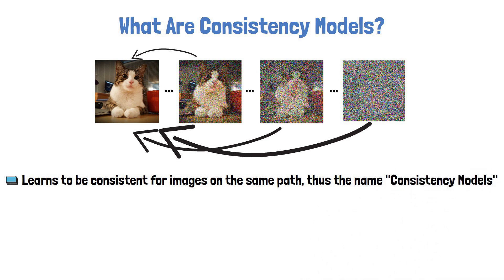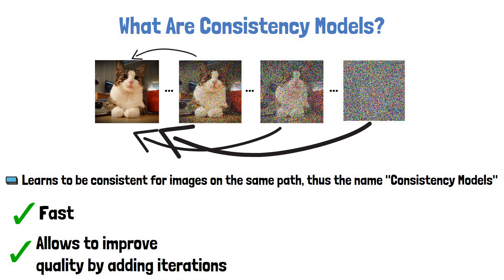With that capability, consistency models can jump directly from a completely noisy image to a clear image, skipping the slow process of diffusion models. Another super powerful attribute, which is new with consistency models, is that it is possible to use few steps instead of one if higher quality image is needed, paying off with more compute.